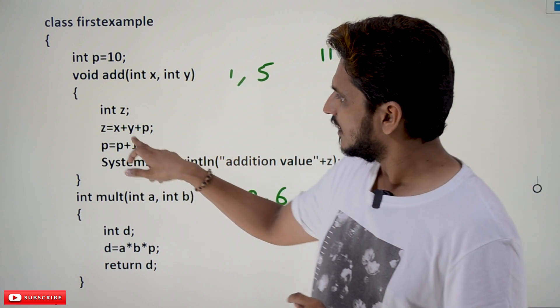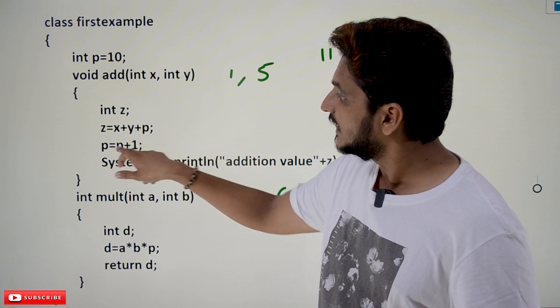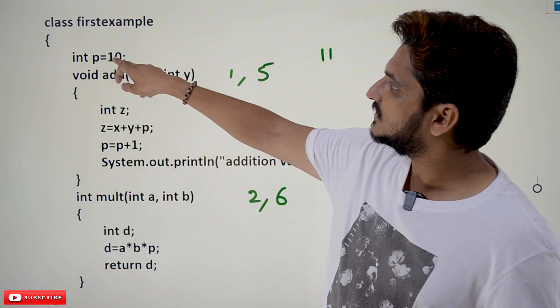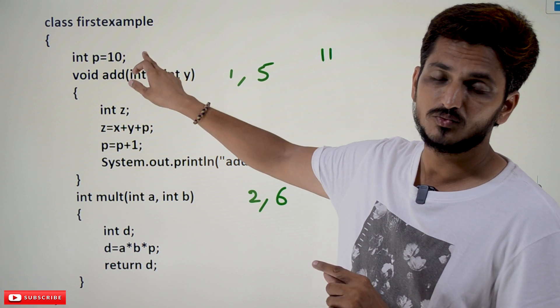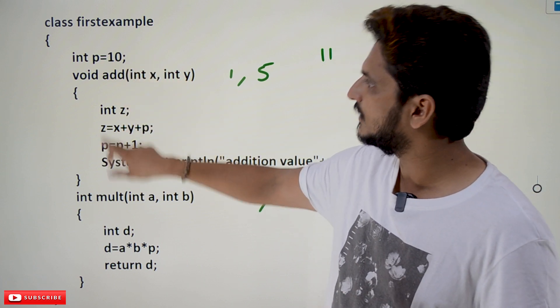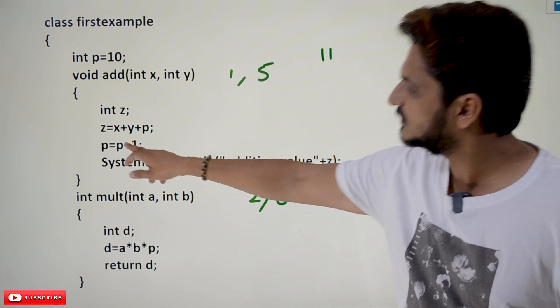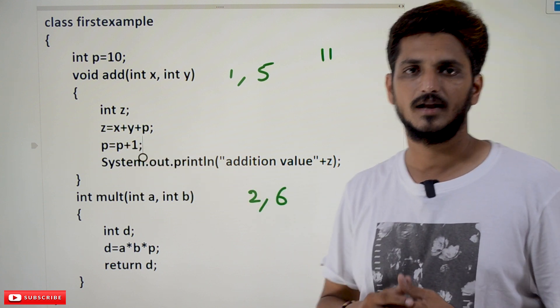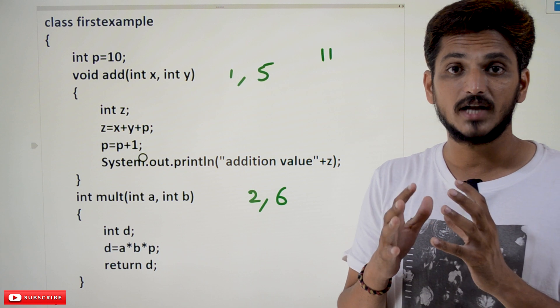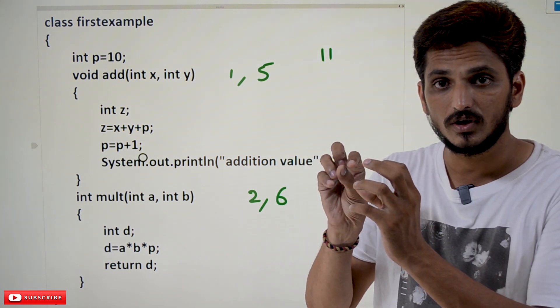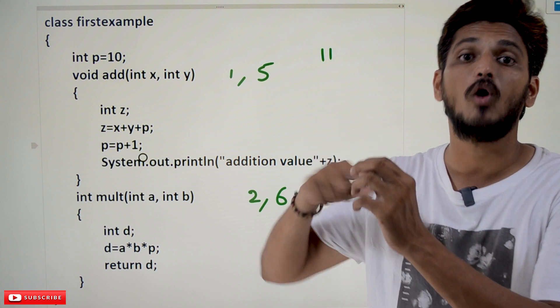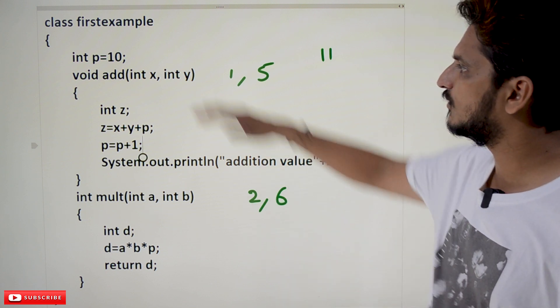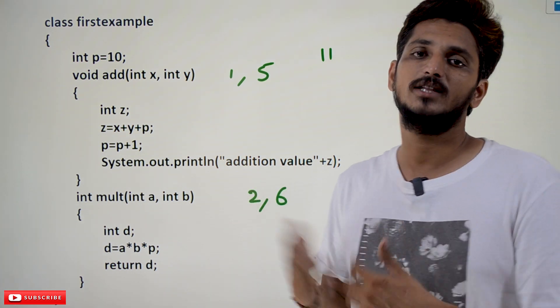One more thing you have to remember. After executing x plus y plus z, we are incrementing this value p is equal to p plus 1. What is the meaning of that? Now, we are changing the value p. p is equal to 10 plus 1, which is 11. Assign it to p means now, from now onwards, after executing this line, p value is 11. You need to understand any method can use the instance variable value or any method can modify the value also. This is very, very important point you need to understand. Global variables means any method can access or any method can modify that value.